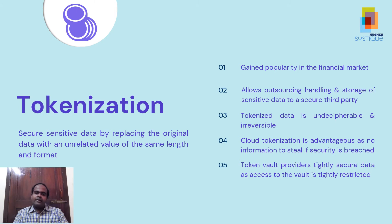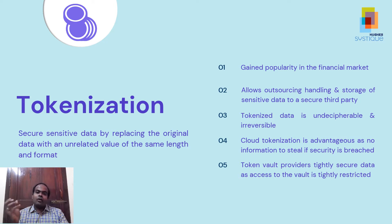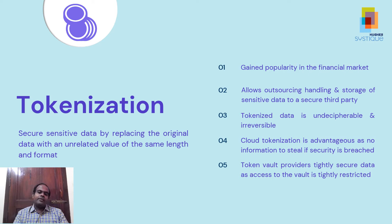Let us start by understanding tokenization. Tokenization gained popularity in the financial market mainly for securing credit card numbers, CVV, PAN, etc. for POS or e-commerce retail transactions. Tokenization is the process of turning sensitive data into non-sensitive data called tokens that can be used in a database or internal system without breaking it into scope. Tokenization can be used to secure sensitive data by replacing the original data with an unrelated value of the same length and format. The advantage of cloud tokenization is that there is no information to steal when a data breach happens — because of this, it virtually eliminates the risk of data theft.